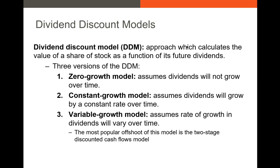We have a couple of different ways to use this model, depending on the growth rates of the dividends. If you have zero growth in dividends, we say you have a zero growth model — it's just a perpetuity. The one you probably saw in Finance 300 is the constant growth model, which is our straightforward Gordon growth model. And then we also have the variable growth model, which can take many different forms. So let's go through each of these.